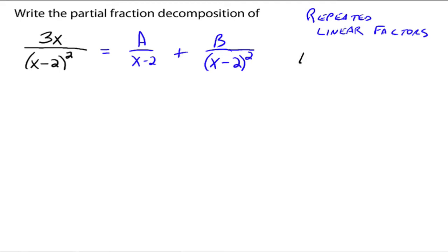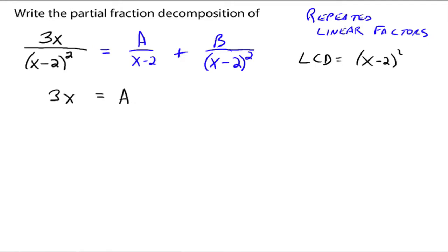Now we go through the same process as before. The LCD would be x minus two squared. Multiply the left side by that and you just get 3x. Multiply the right side by that: for the first fraction, one of the x minus two's cancels, leaving A times x minus two. Then for the second fraction, it all cancels and you're just left with B.